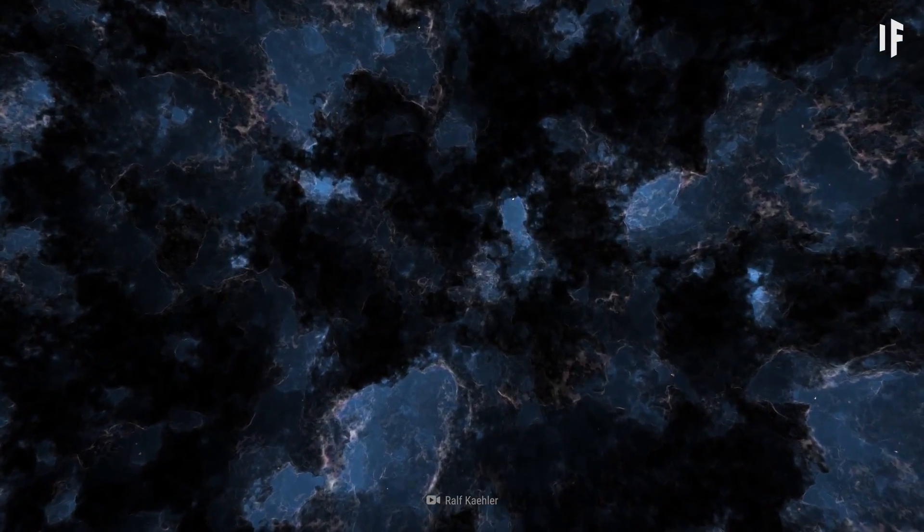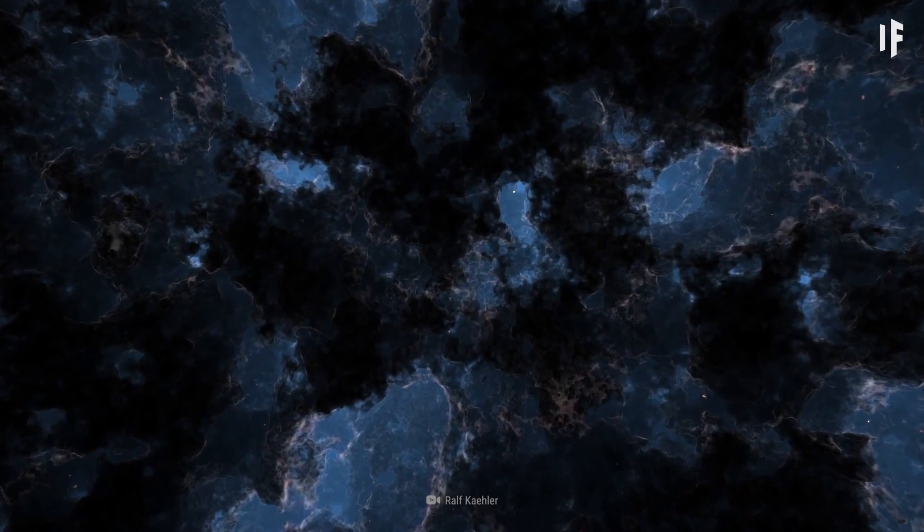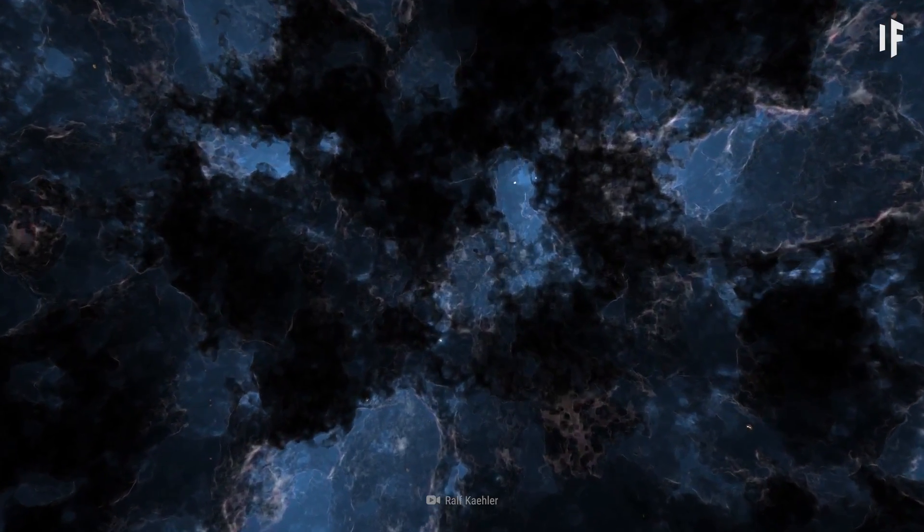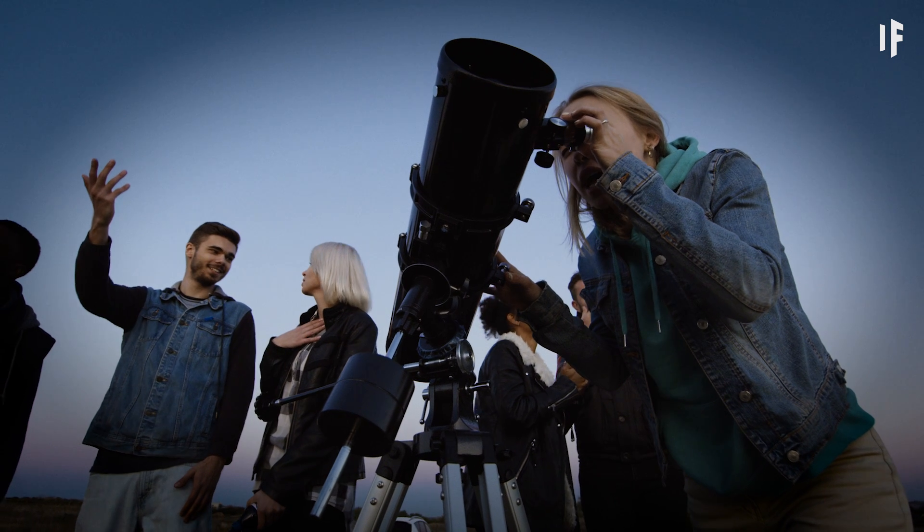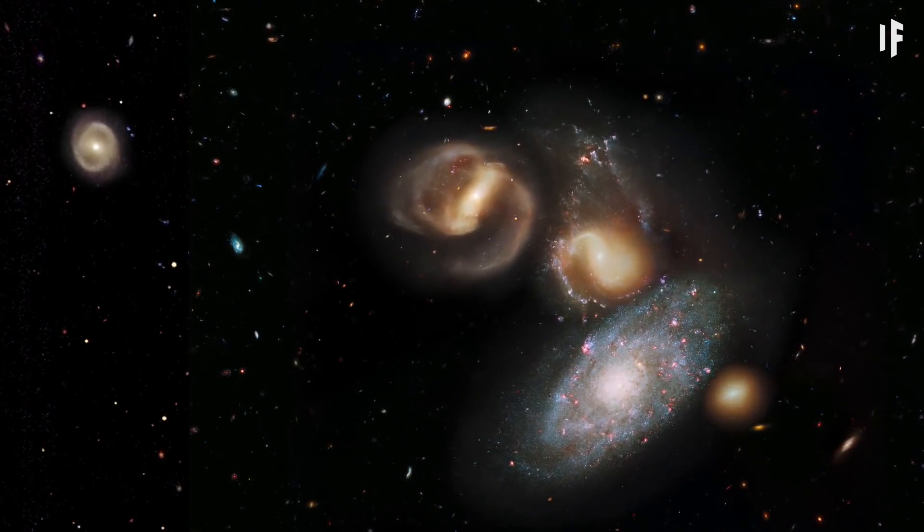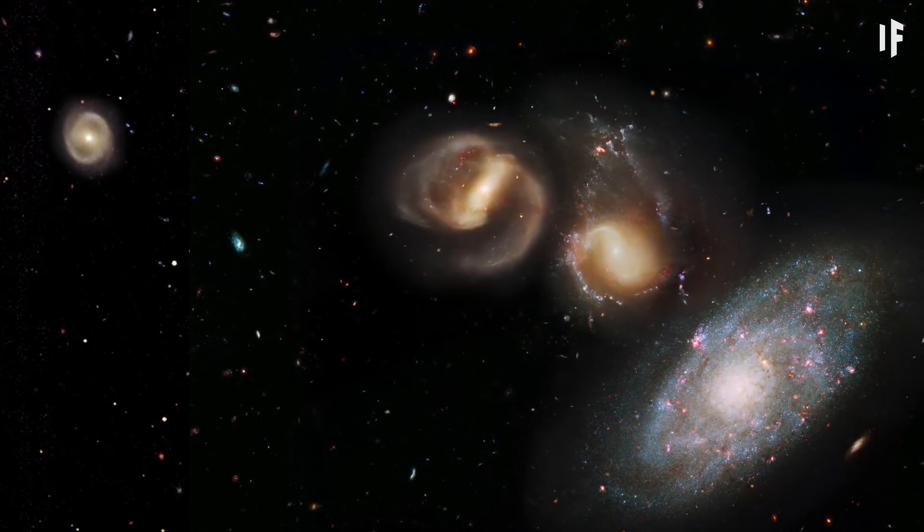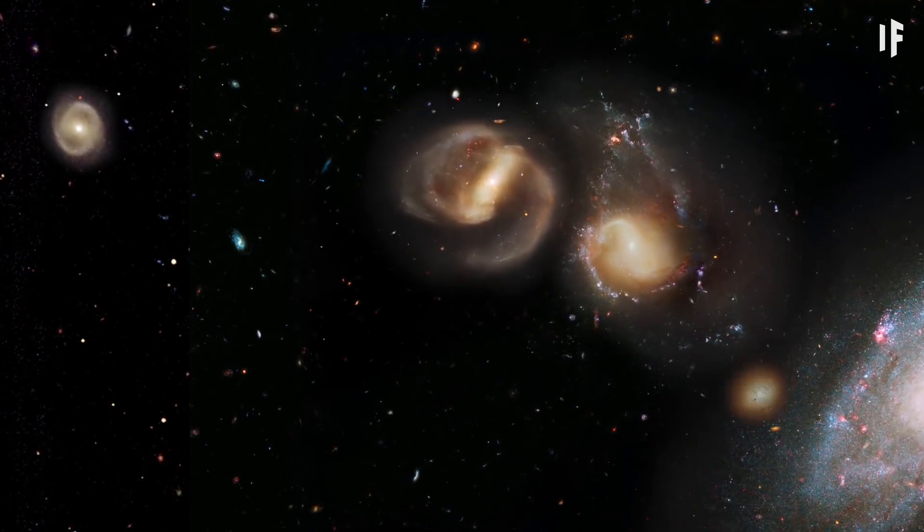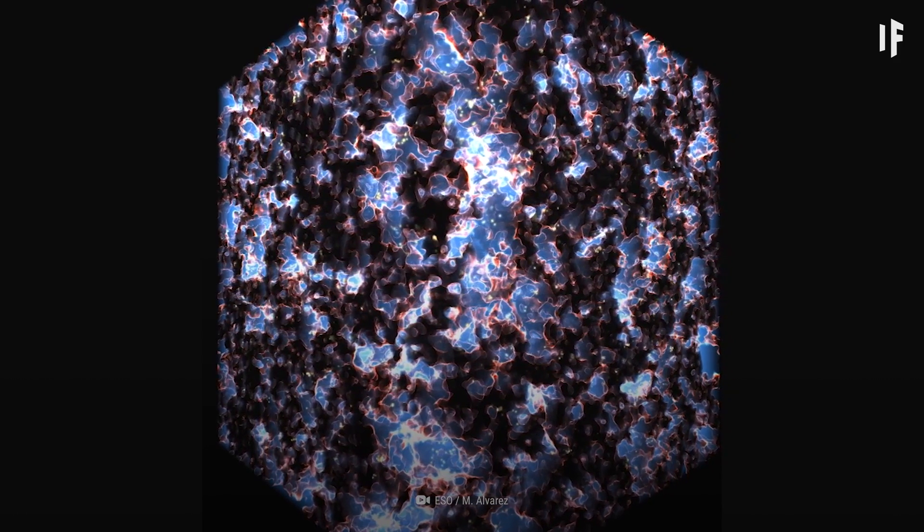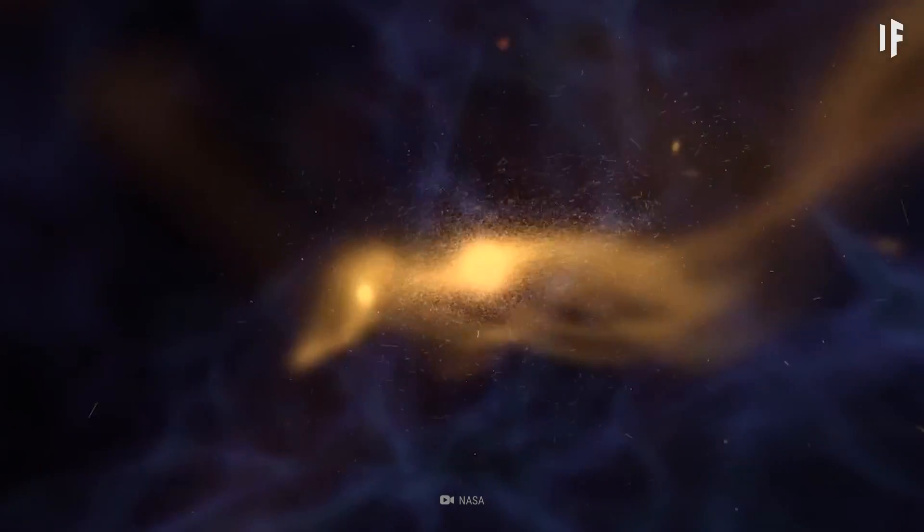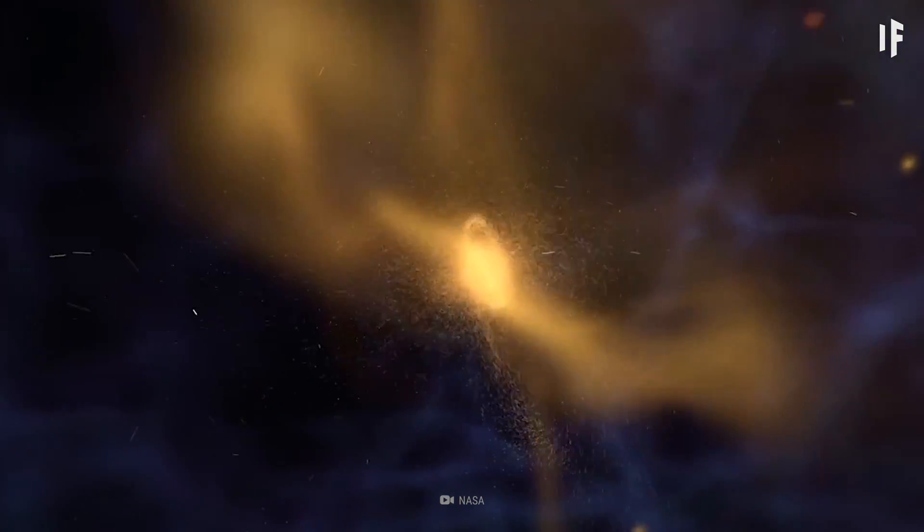Dark matter doesn't interact with ordinary matter at all. It's invisible to electromagnetic radiation and light. The only thing that makes scientists think dark matter exists is its gravitational effects on galaxies. Scientists also think that dark matter outweighs visible matter by approximately 6 to 1, making up 27% of the Universe.